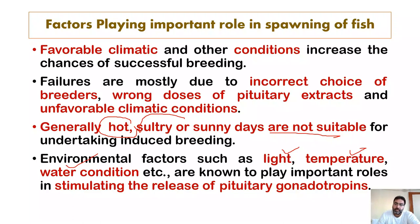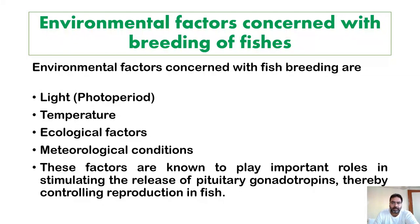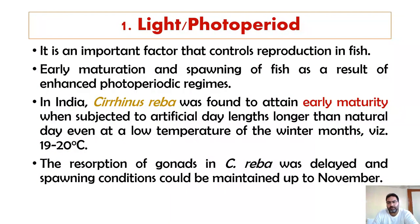These environmental factors are also responsible for the release of pituitary hormones in the form of gonadotrophins. The follicle stimulating hormone (FSH) and the luteinizing hormone (LH) are responsible for the fish to breed. The main environmental factors concerned with fish breeding are light, temperature, ecological factors, and meteorological factors, which stimulate the release of pituitary gonadotrophins and thereby control reproduction in fish.